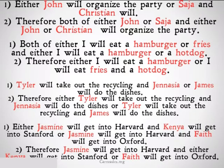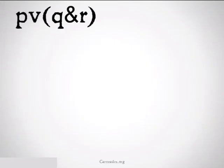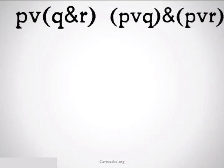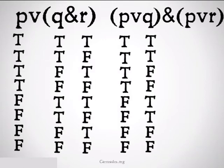Let's take a look at the truth tables to make a little bit more sense of that. In our first case, we have P or (Q and R), and we can split that up into (P or Q) and (P or R).